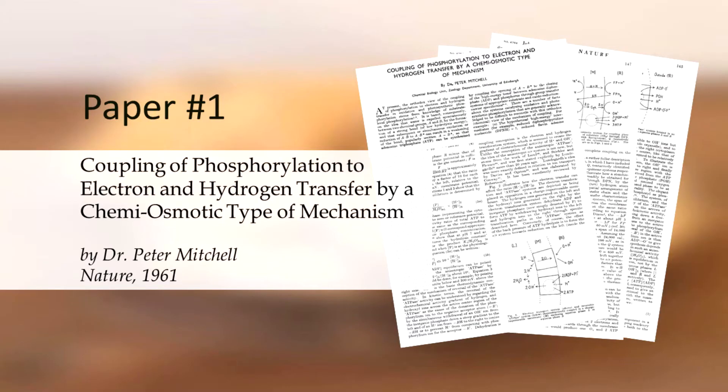Paper number one is Coupling of Phosphorylation to Electron and Hydrogen Transfer by a Chemiosmotic Type of Mechanism by Peter Mitchell, published in the journal Nature in 1961.